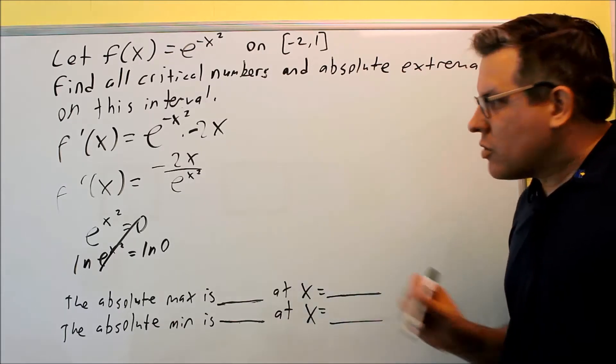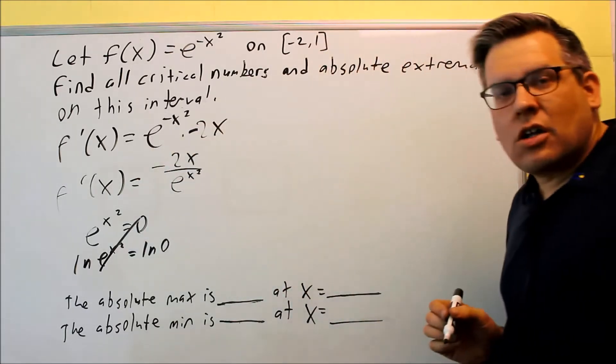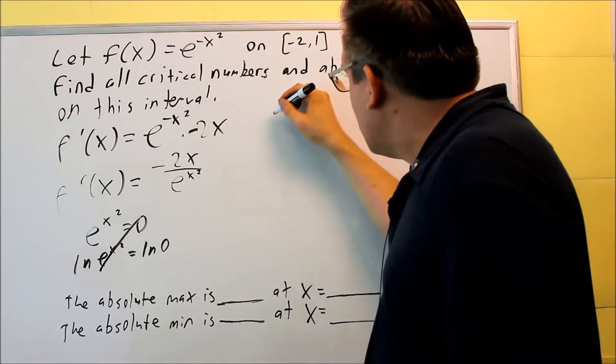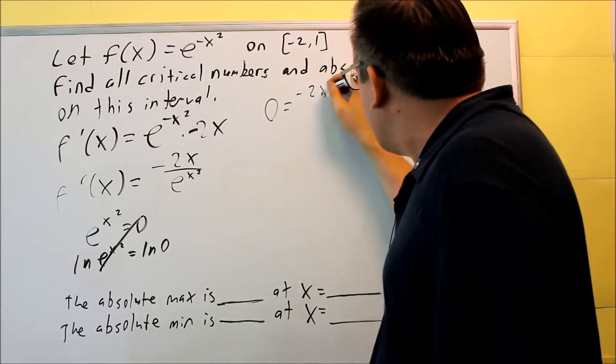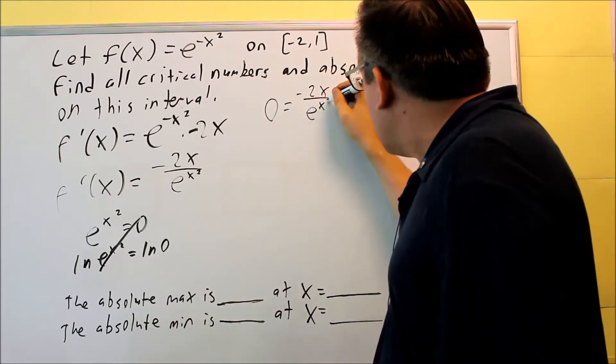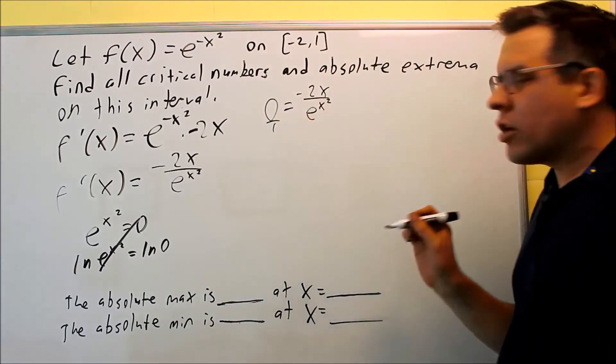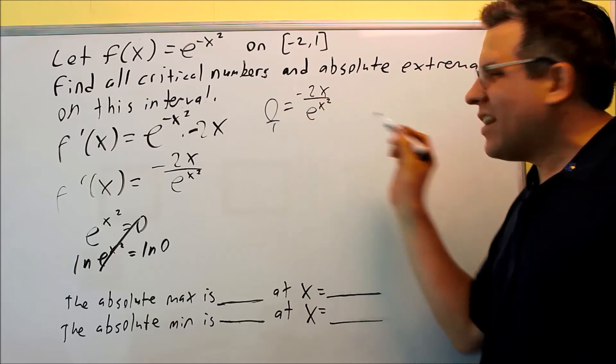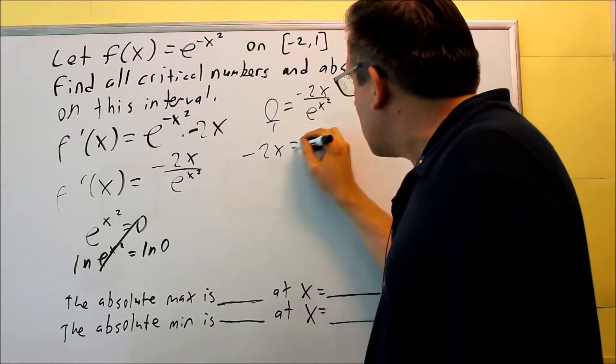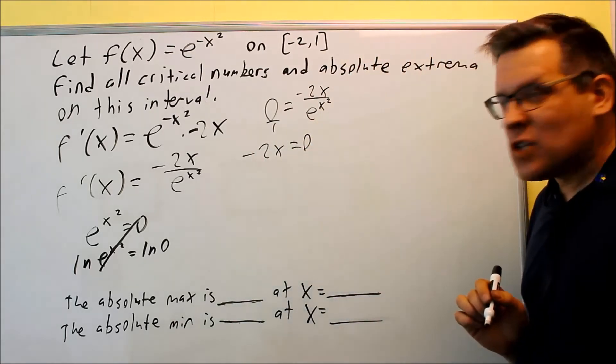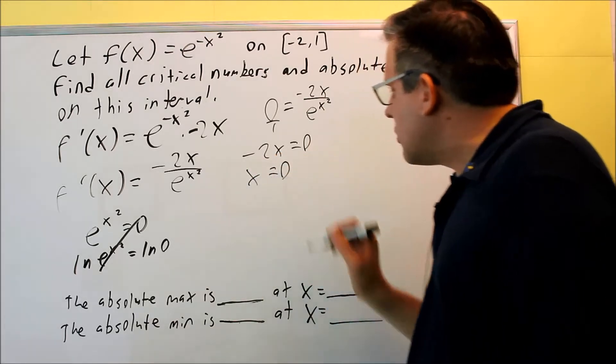The other way you find critical numbers is if you take this, set it equal to zero. So we're going to do zero equals negative 2x over e to the x squared. To do this, we're going to cross multiply it. So if I multiply that, I get zero. So I get negative 2x is going to equal zero. Divide both sides by negative 2, and I'll get zero.